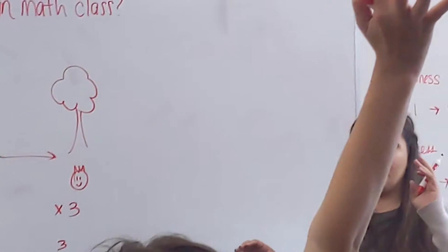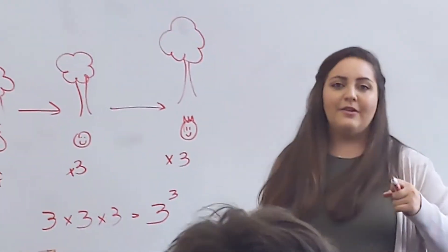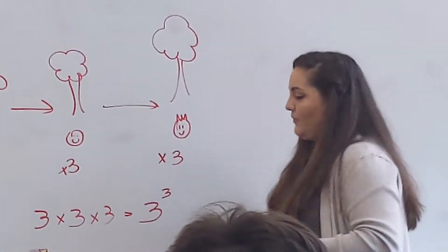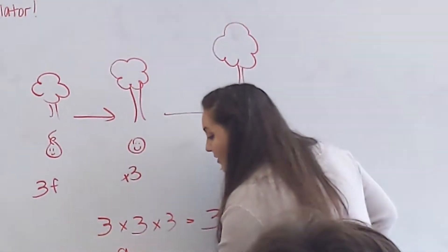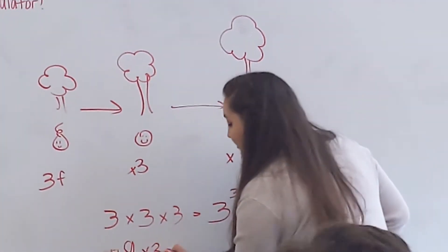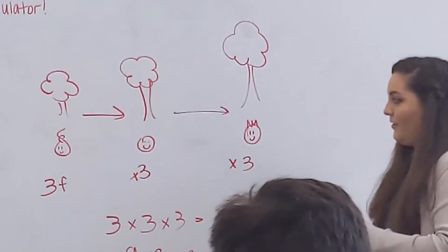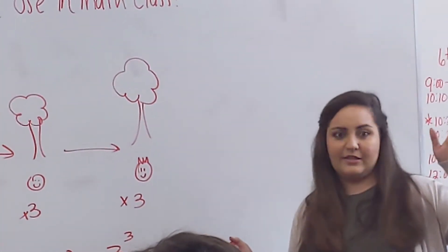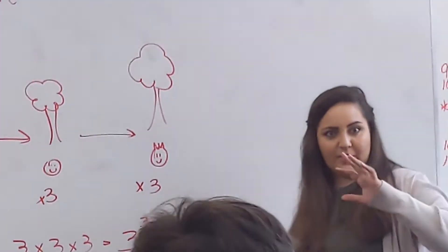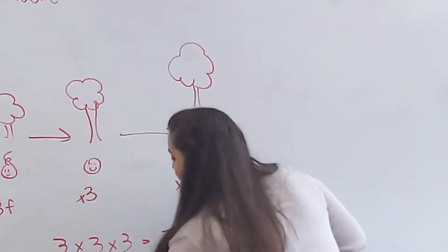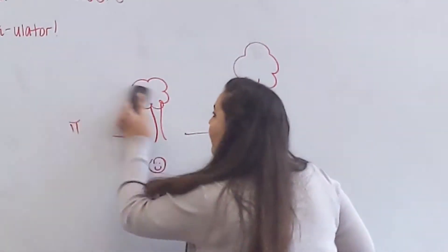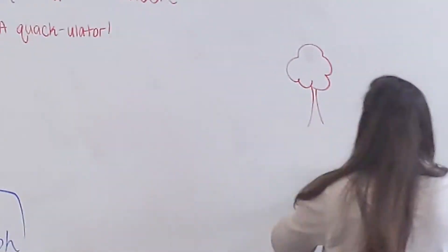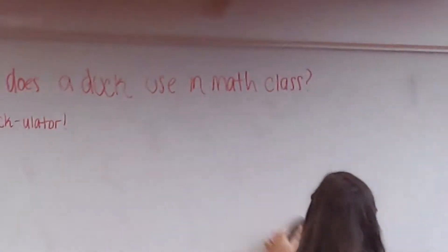But we remember that when you have the same numbers being multiplied in a row, like three, three, and three, to write it in a simplified version, it'll just be three to the third power. Does anybody know three to the third power equals? Joey? Twenty-seven. Because we have three times three is nine times three equals twenty-seven. Any questions? Raise your hand if we understand this.